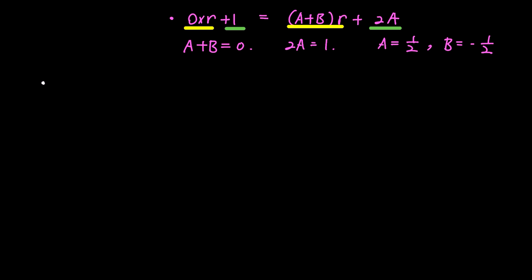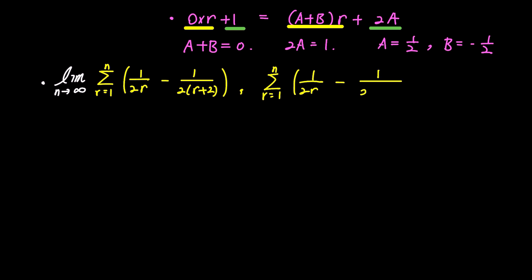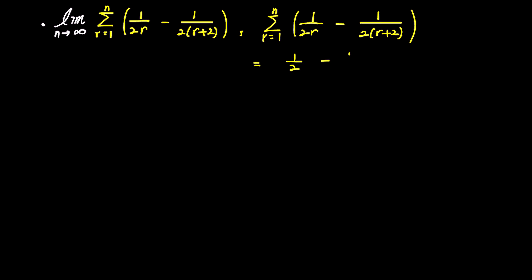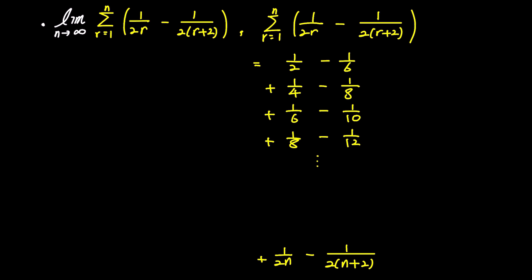Substituting these values for a and b back into the problem, we get the limit as n approaches infinity of the sum of 1 over 2r minus 1 over 2 times r plus 2 as r goes from 1 to n. Let's list the terms: when r is 1, it becomes 1 over 2 minus 1 over 6; when r is 2, it becomes 1 over 4 minus 1 over 8; when r is 3, it is 1 over 6 minus 1 over 10; when r is 4, it is 1 over 8 minus 1 over 12. The last term when r is n is 1 over 2n minus 1 over 2 times n plus 2, the second to last when r is n minus 1, and the term before that when r is n minus 2.